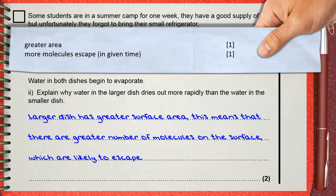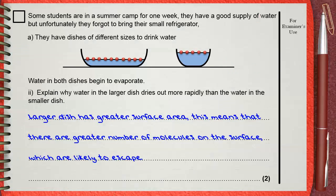The two marks are for greater area and the second mark is for more molecules can escape. Question triple I.